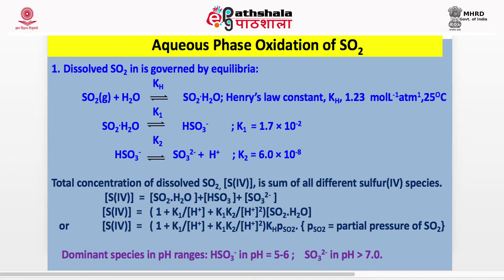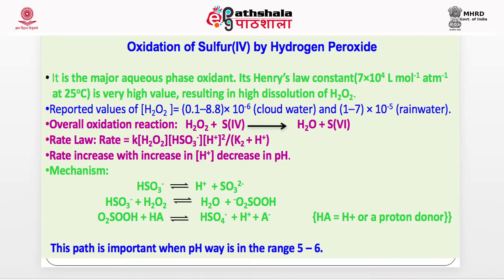Remember that H⁺ is in the denominator of the S(IV) expression, so if hydrogen ion concentration decreases (pH increases), the solubility factor increases and more SO2 dissolves. Therefore, SO2 dissolves more readily when the pH of atmospheric water is high. This is relevant to India because here the pH is high, so sulphur dioxide will dissolve easily in water.